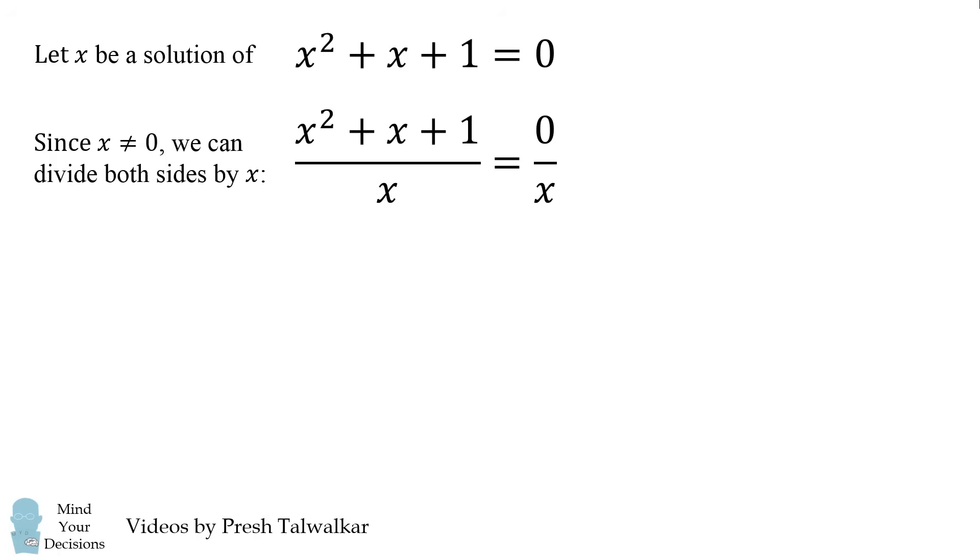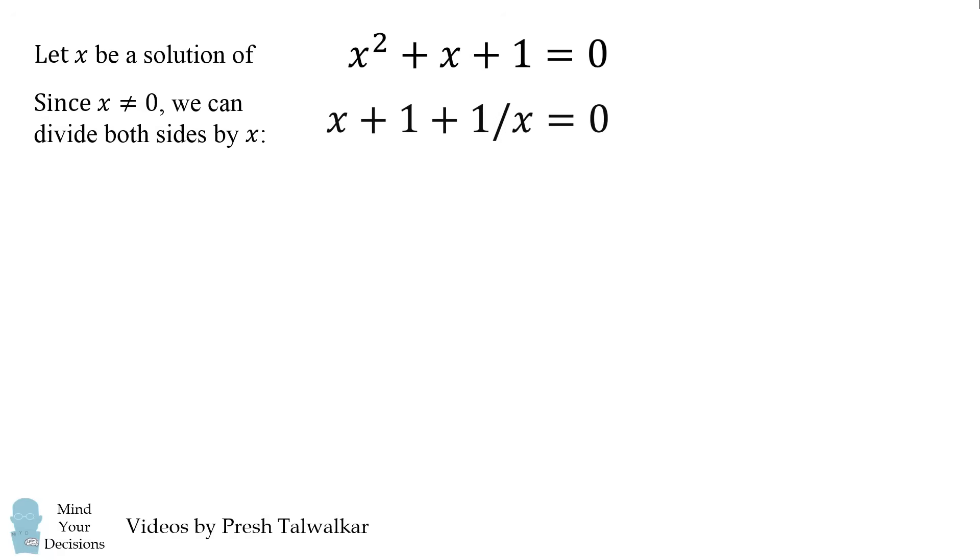Let's simplify this to the following form. We have x + 1 + 1/x = 0. Now, from the first equation, we have x + 1 = -x².